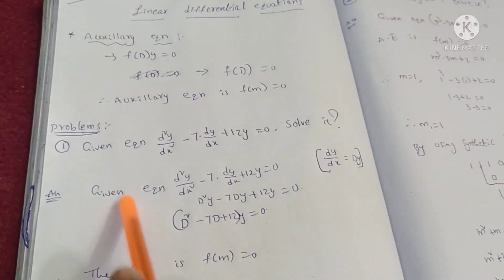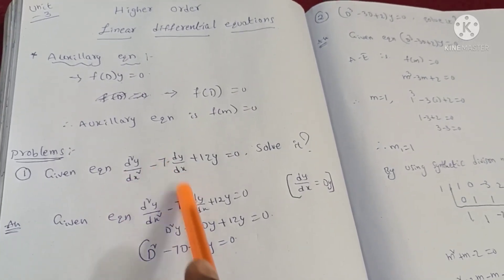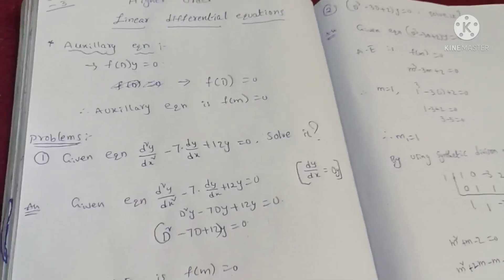First problem: given equation d²y/dx² minus 7 dy/dx plus 12y equals 0. This is the solution here.